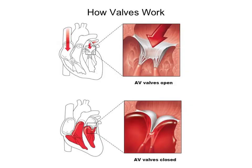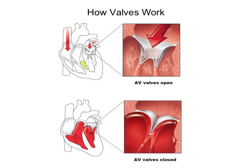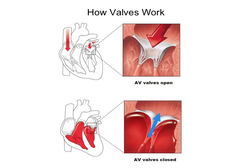So how do valves work? How do they keep blood flowing in one direction and prevent blood from flowing backwards? Atrioventricular valves are found between the atria and the ventricles. Their cusps are attached to chordae tendineae, which are attached to papillary muscles, which are attached to the inner wall of the ventricles. When an action potential passes into the ventricular walls, it also passes to the papillary muscles, causing them to contract. When papillary muscles contract, they pull on the chordae tendineae, which pulls on the cusps of the atrioventricular valves, closing the valves and preventing blood from flowing back into the atria.